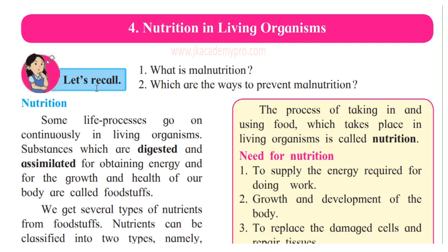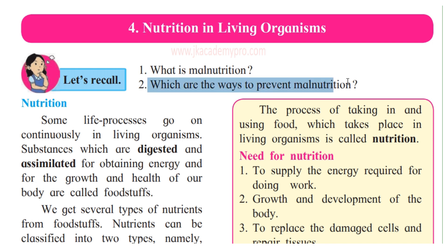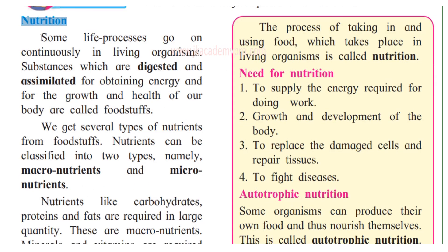Do you recall, children, what is malnutrition? Malnutrition occurs when all the nutrients that the body needs are not obtained in the proper proportions from the diet. We can prevent malnutrition by having a balanced diet. A diet containing adequate quantities of all nutrients is called a balanced diet.